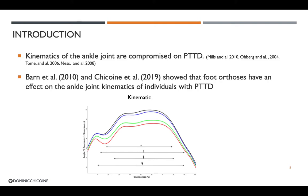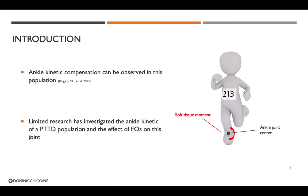Barn et al. and Shekhin et al. show that foot orthoses have an effect as they decrease ankle eversion angle in individuals with PTTD. Foot orthoses can decrease ankle eversion angle, but we also know that ankle inversion moment can be higher in this population, as shown by Ring et al. in 2007.